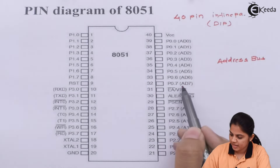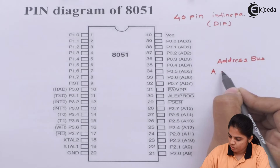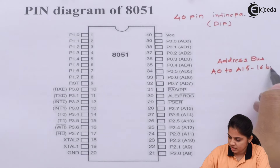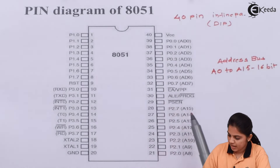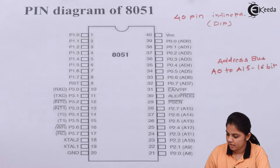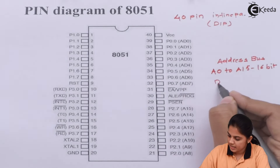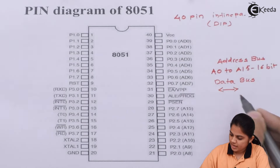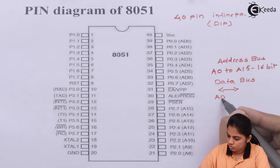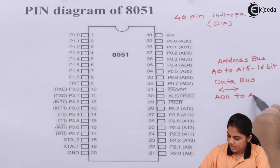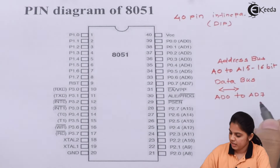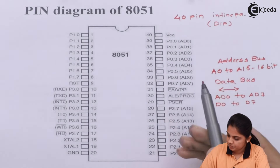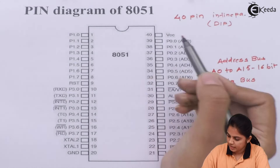Here we also have AD0 to AD7. That means from A0 to A15 we have a 16-bit address bus, so these pins can be utilized for addressing. The address bus and data bus are merged together. The data bus is a bi-directional bus, so AD0 to AD7 can also be used for transferring data — written as D0 to D7, that is pin number 39 to pin number 32.